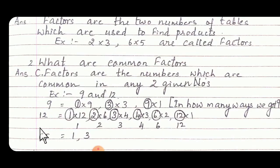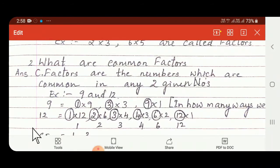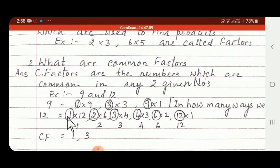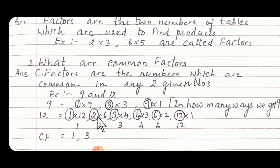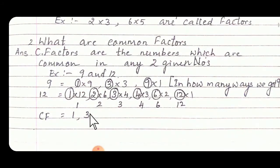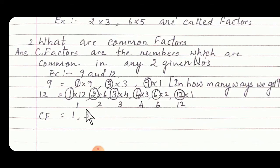Then by 12: 1 12s are, 2 6s are, 3 4s are, 4 3s are, 6 2s are, and 12 1s are. Find the common numbers between 9 and 12 — that is 1 and 3. So write down common factors: 1 and 3.